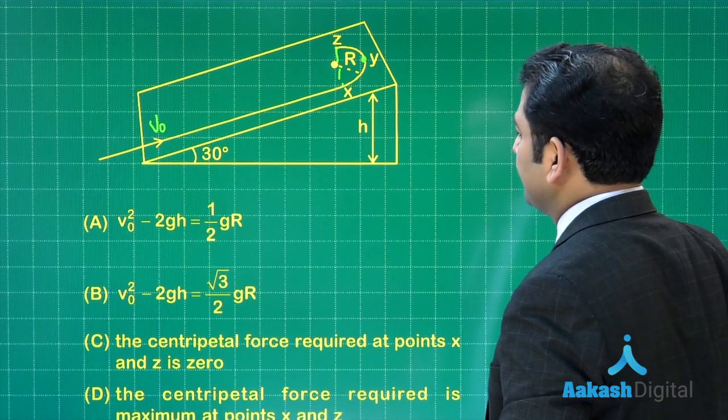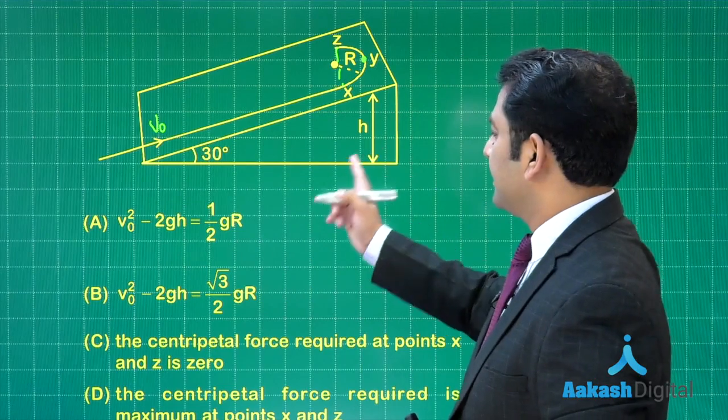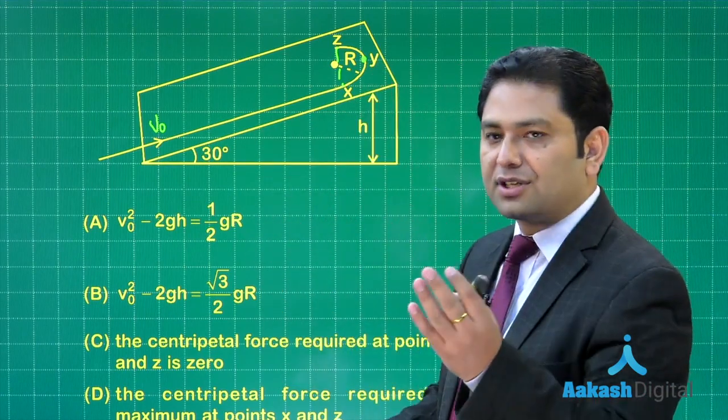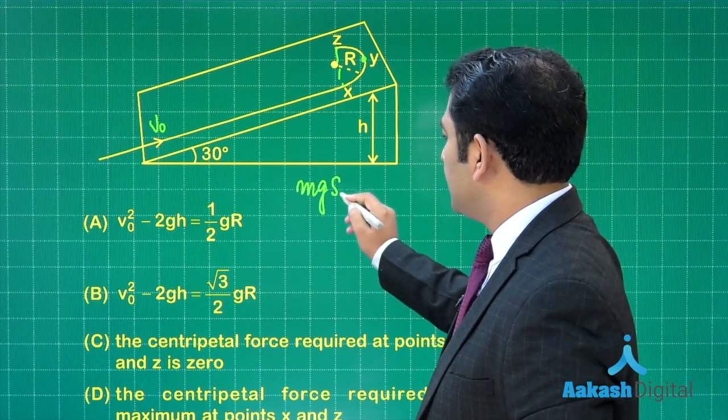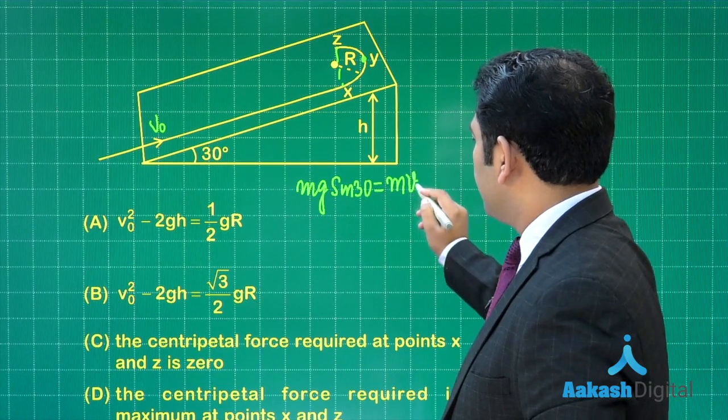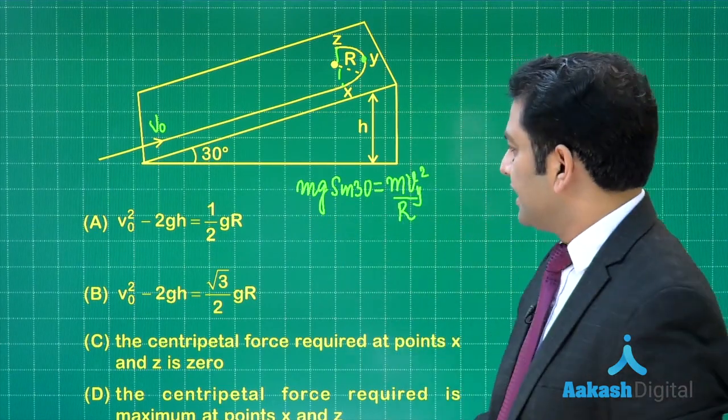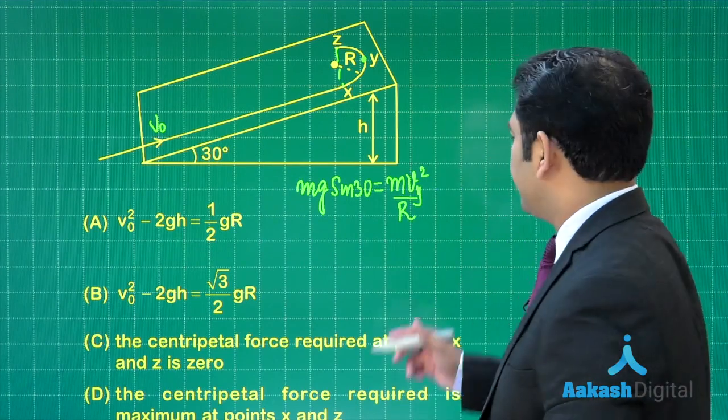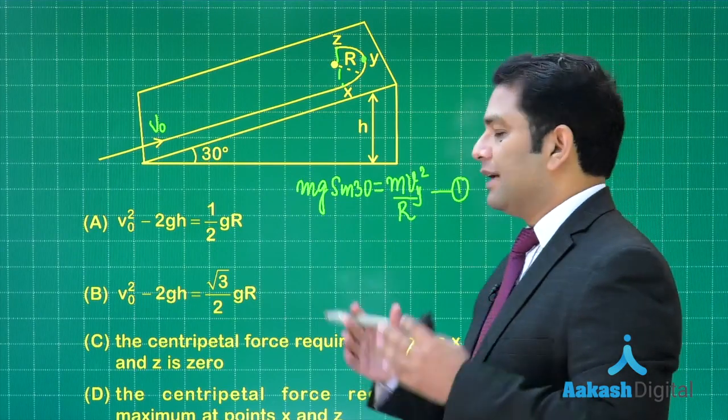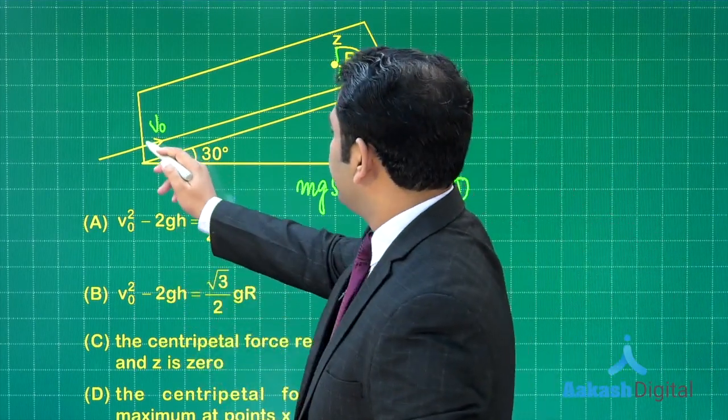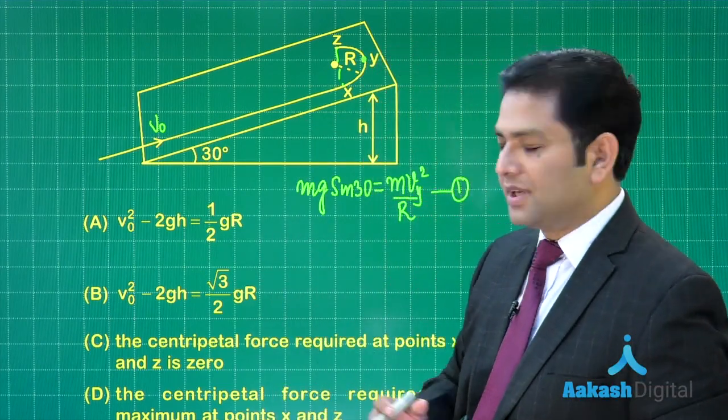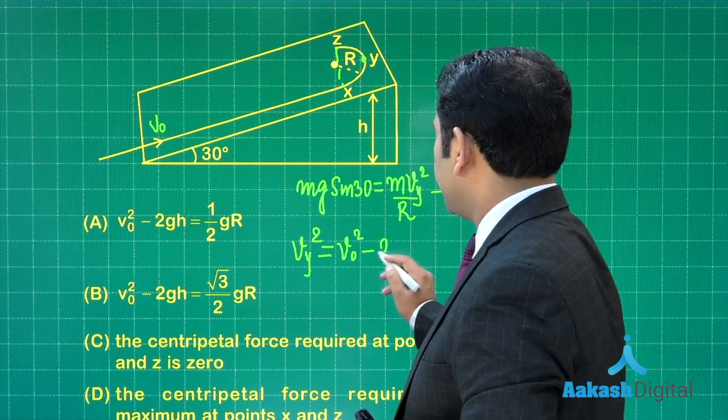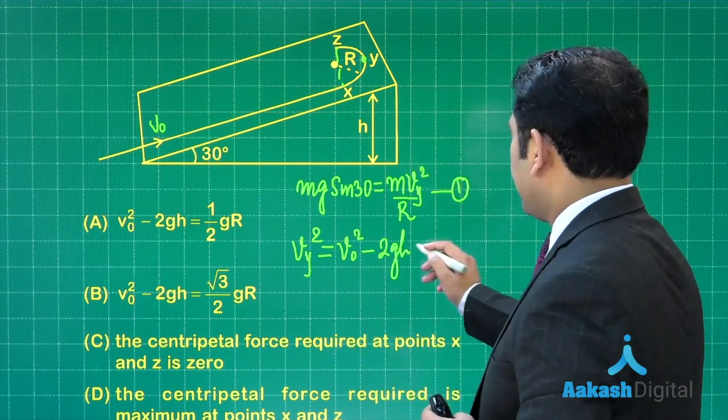We need to find out what are the options that we got to choose. The first option relates v₀ with the height and with the radius. Just imagine: at the highest point, what is the force towards the center? That is the sine component of mg. So that will be mg sin 30 equals m v_y square divided by R. That is the relation between the force providing the centripetal and the speed. This is equation number one. What about equation number two? I can relate v₀ with v_y by using energy equation: v_y square equals v₀ square minus 2gh. That is simple energy conservation.